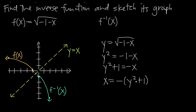Now that we've solved for x, the next step in finding the inverse function is to switch the x and y variables. Where we had x, we put y, and where we had y, we put x. So we get y is equal to negative quantity x squared plus 1.